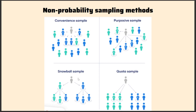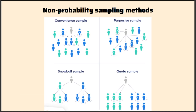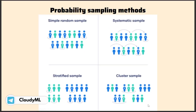Then we have the snowball sample — suppose this is the researcher and these are the assistant researchers or recruits. By their contacts they will select other samples which are very useful for the study. Then you have the quota sample — a quota is created where subgroups are formed and samples are picked up from each group until the quota is reached. For example, if the quota is 10 samples, samples will be picked from each group until that quota of 10 has been reached.